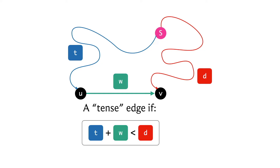Hopefully it's fairly visible that this inequality is telling you there is a better way to get to v compared to whatever option you had in mind when you stored the value d. That better option is to simply come to u first — in whatever way you were able to get to u with a total cost of t — and then jump across the edge from u to v with an additional cost of w.